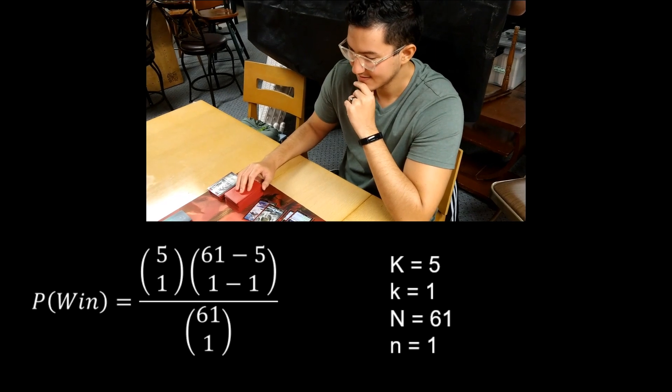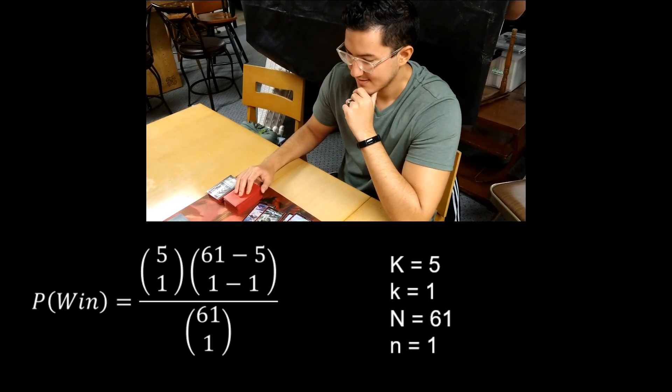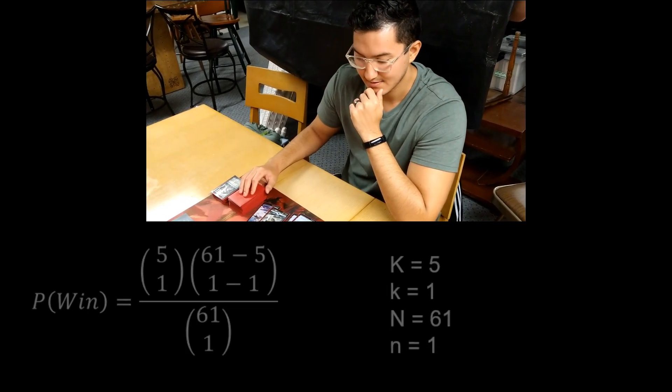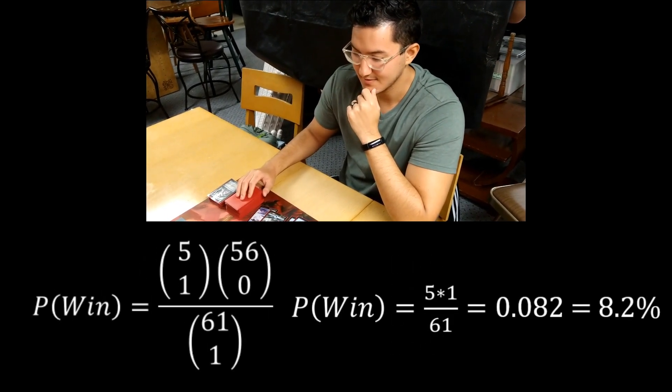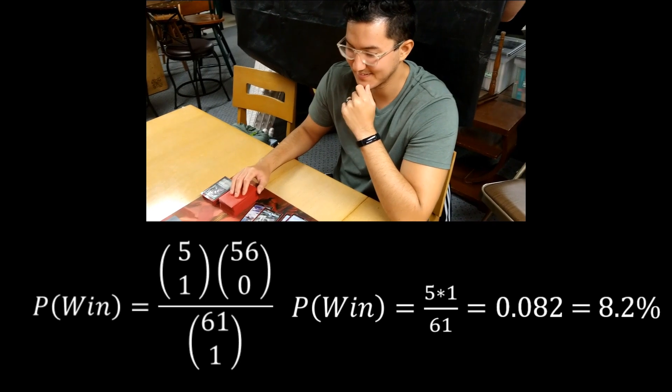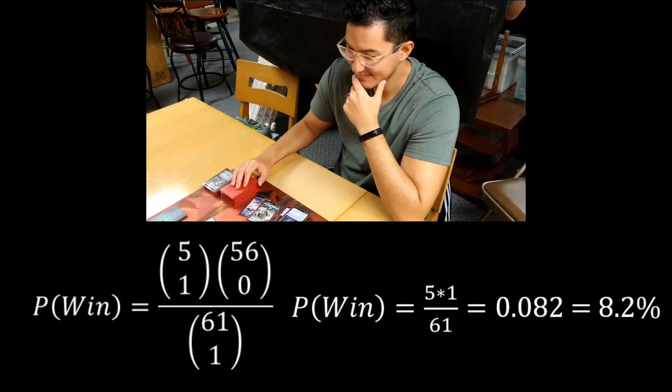He knows he has 61 cards in the deck. He calculates the percentage to get 8.2%. He has his answer.